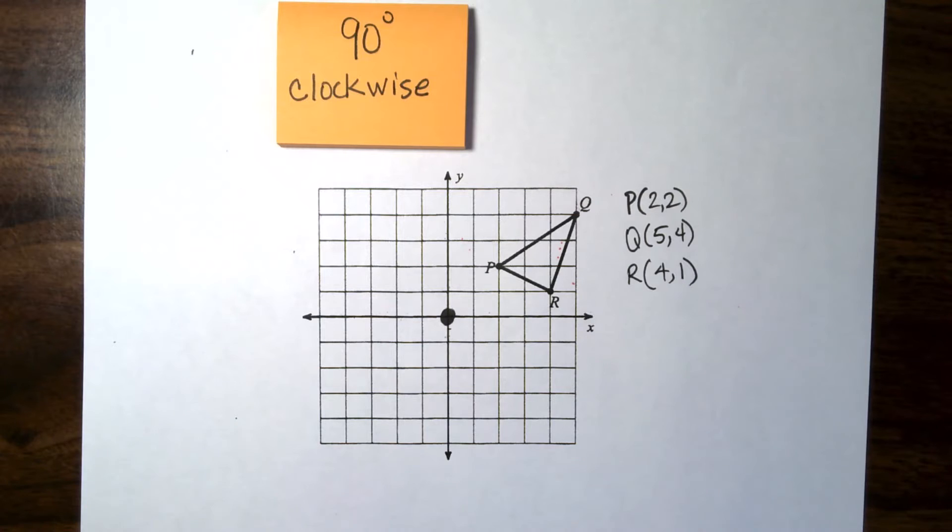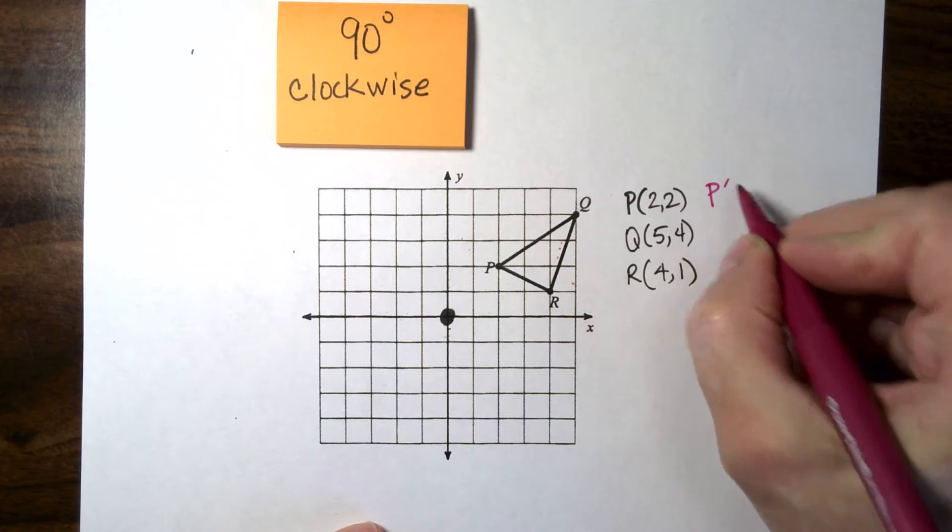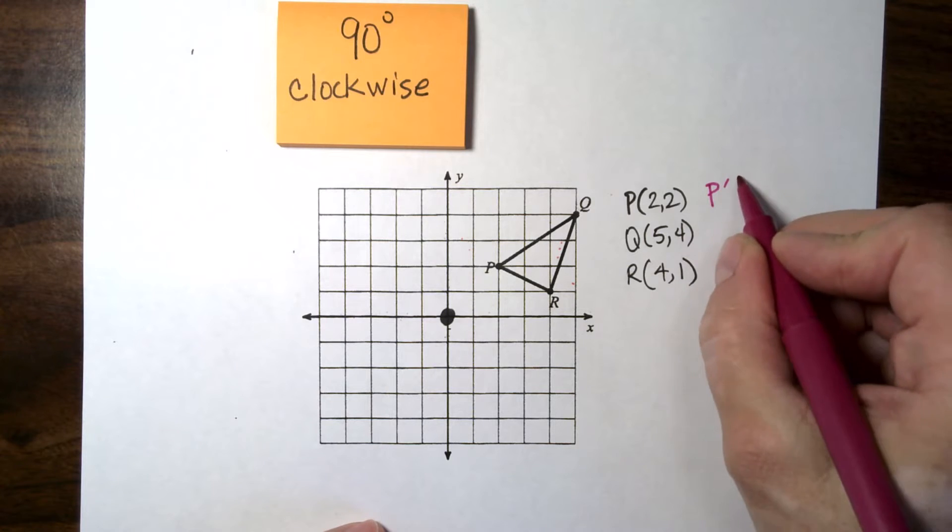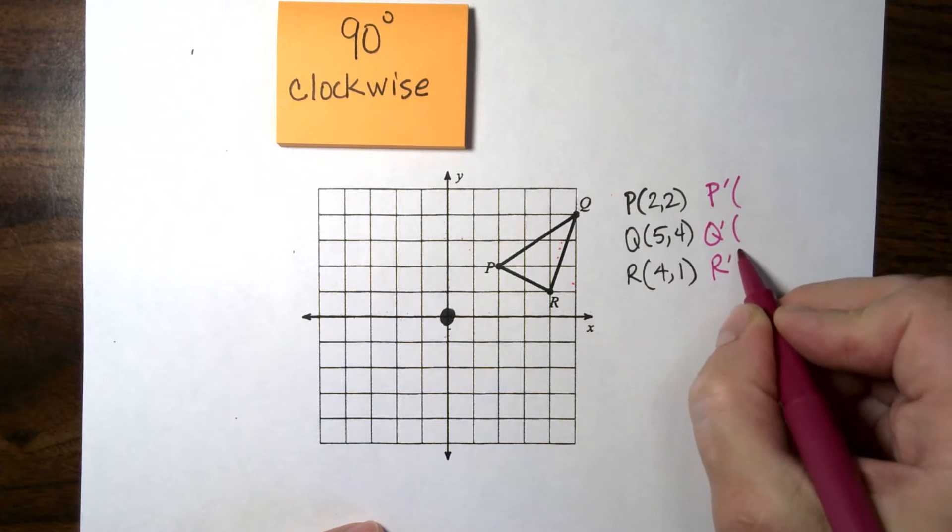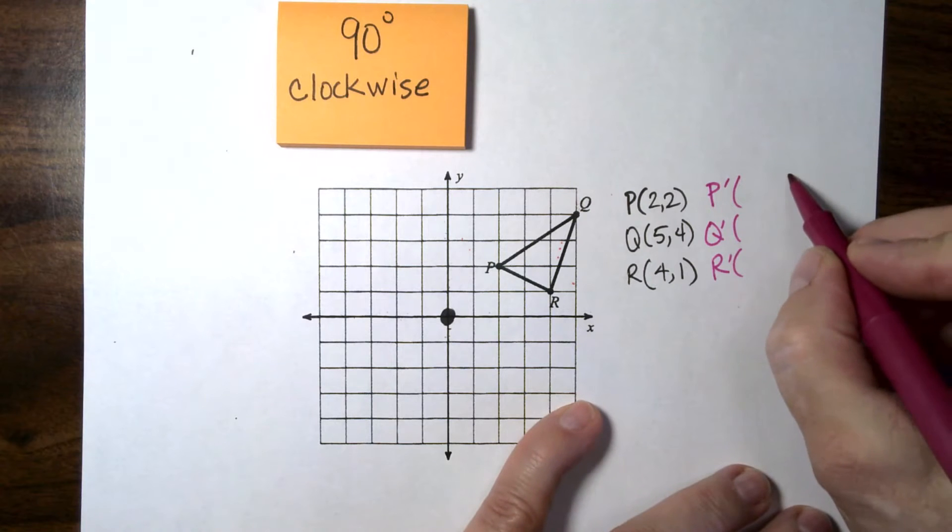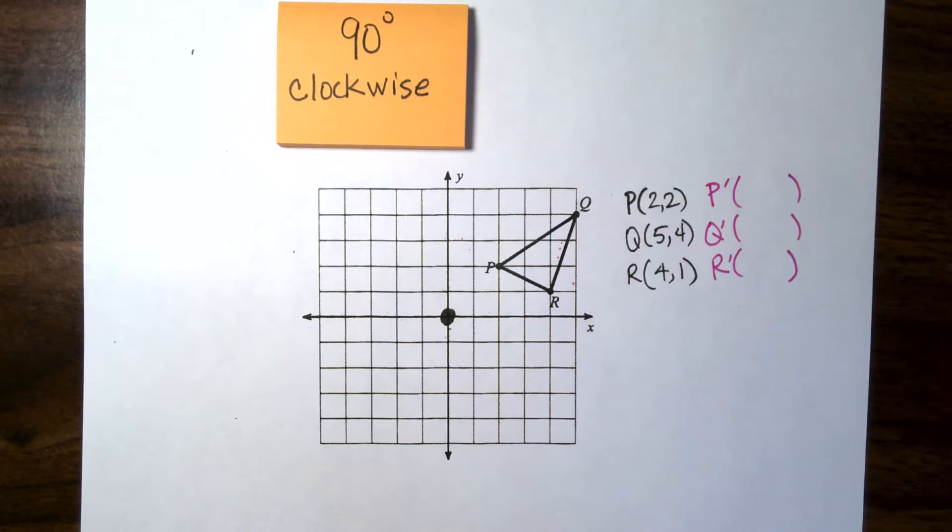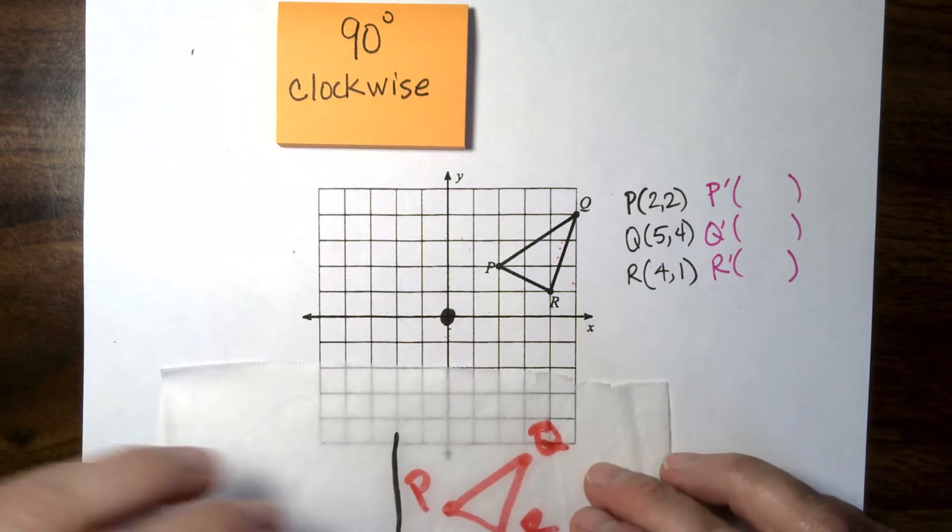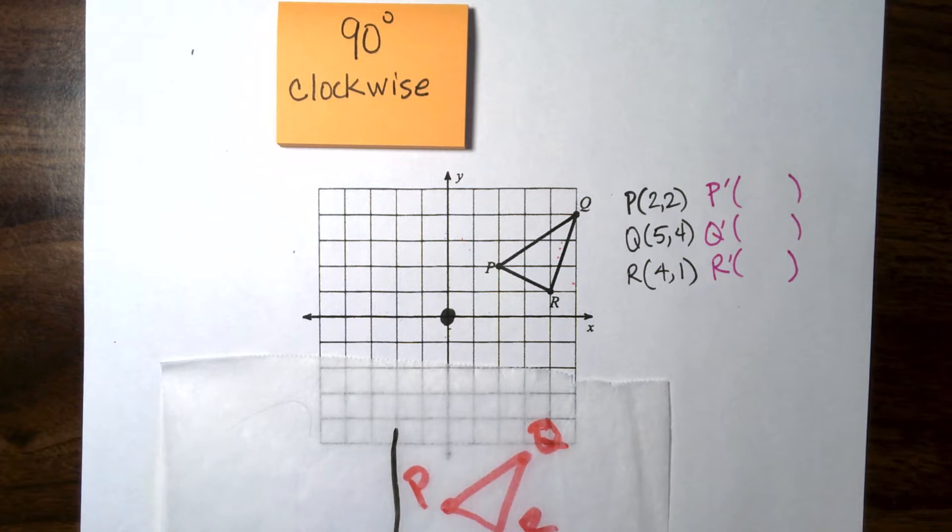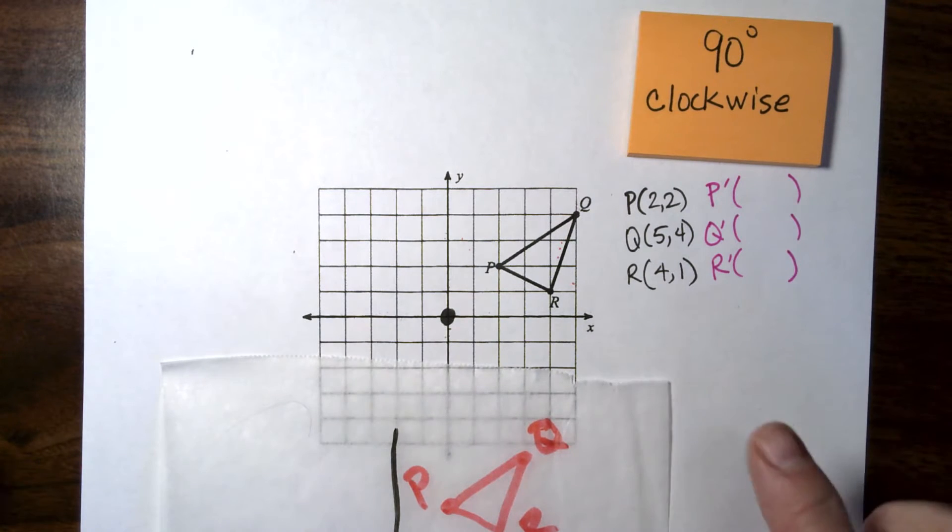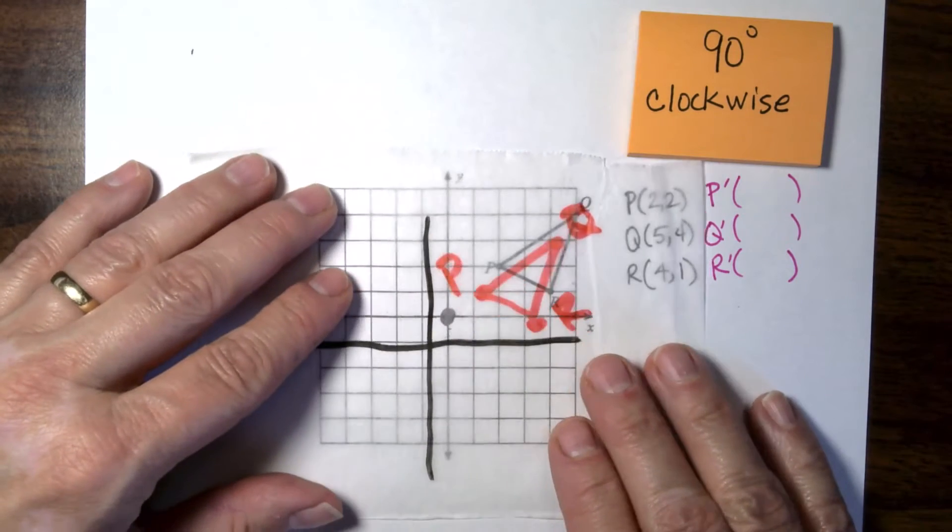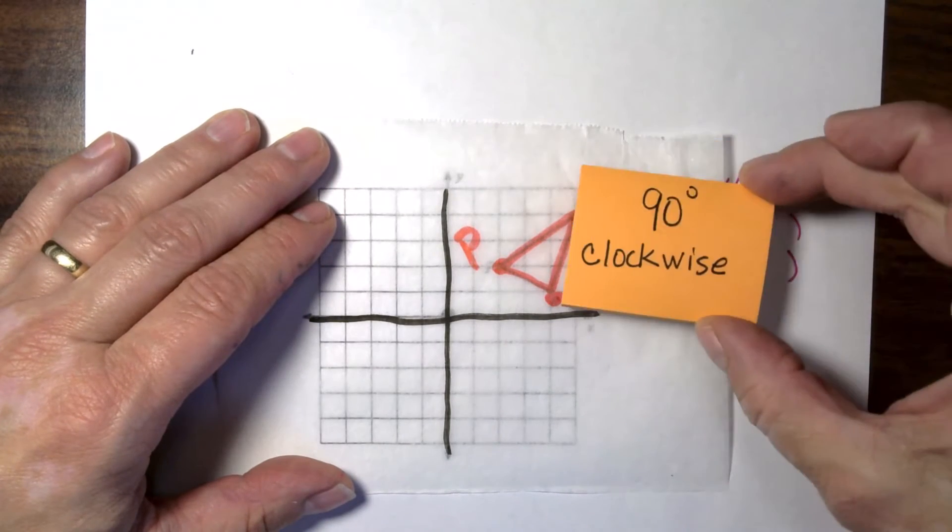And what we're going to be asked to do is to change these points so we come up with P prime is what they call that. You put a little apostrophe on it. What will be those points? Q prime and R prime. And we're going to do that using the tracing paper to figure out what those are. There are shortcuts for finding these just using the points. But I, as a teacher, found that kids do much better if they can visualize it first.